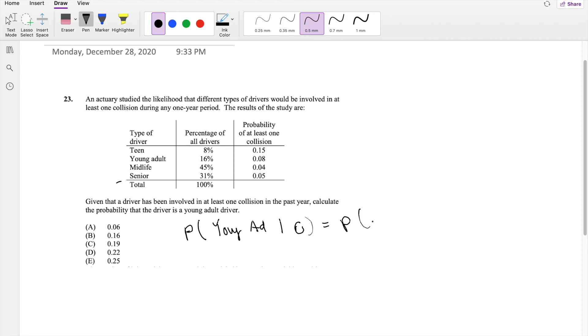So this is equal to the probability that they were young adults and they had a collision, divided by the probability that they had a collision.